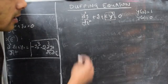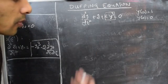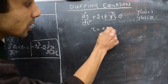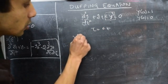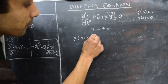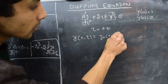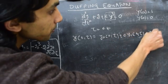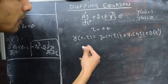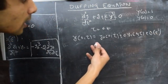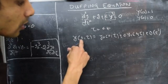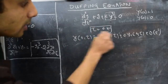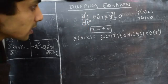The idea behind seeking a multi-scale expansion of this differential equation is to introduce a new time scale τ = ε·t, and then look for an expansion of y in the form y₀(t, τ) + ε·y₁(t, τ) plus higher order terms. When writing this expansion we treat t and τ as independent variables, though they have a dependency that comes into play when we calculate derivatives.